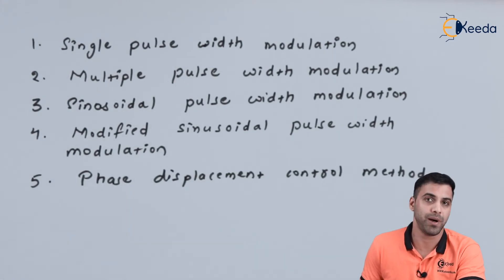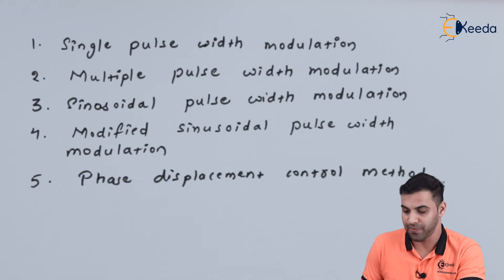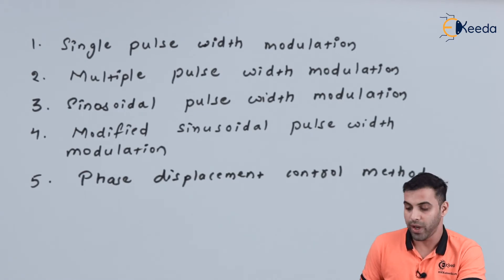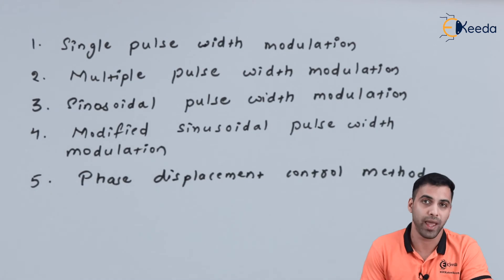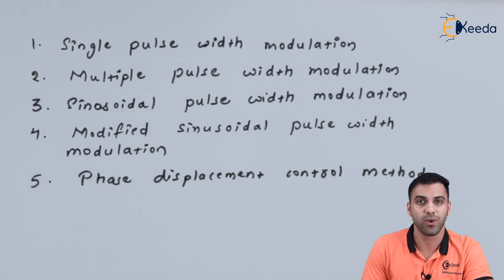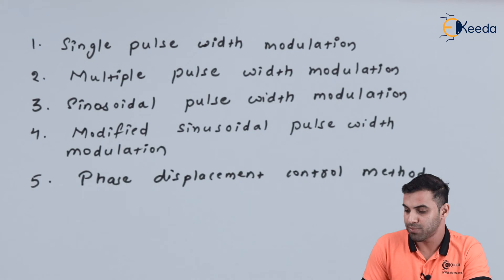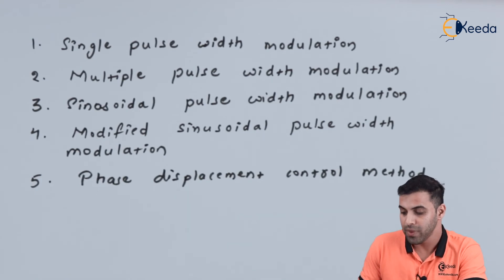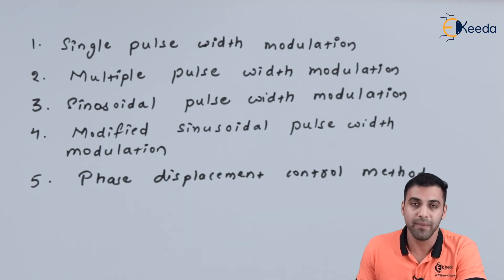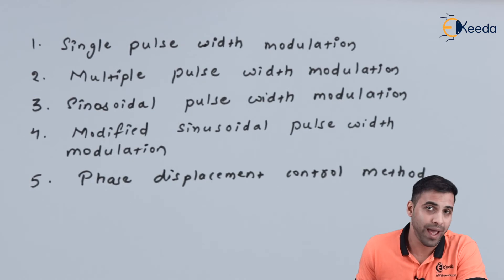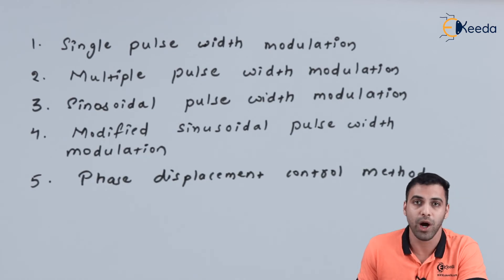We will be changing the width of multiple pulses to control the output voltage of an inverter. Number 3 is sinusoidal pulse width modulation, where we will be introducing a sine wave to control the output voltage. Number 4 is modified sinusoidal pulse width modulation, where we will be modifying the sine wave amplitude and width to control the output voltage of an inverter.